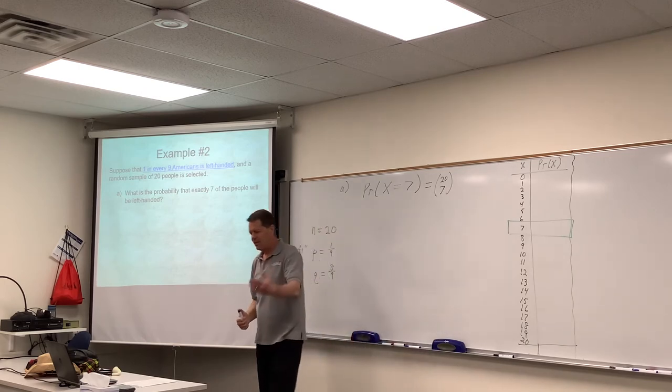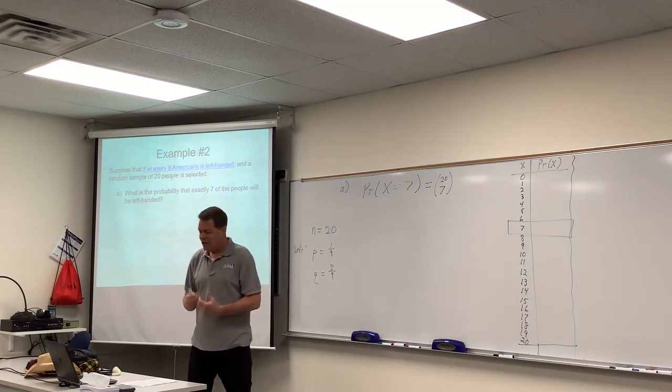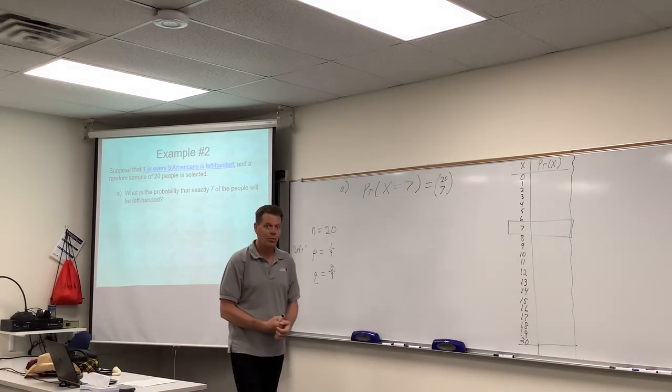And I don't care what order. It could be the first seven, the last seven. There's a lot of ways for that to happen. That combination is a huge number. This tree would be crazy. So we're not going to try to draw a tree on this one like we did on the basketball player.